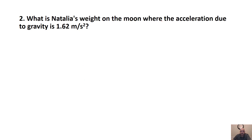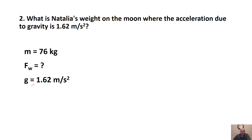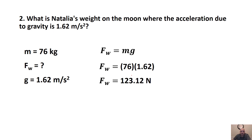What is Natalia's weight on the moon where the acceleration due to gravity is 1.62 meters per second squared? They're giving you Natalia's mass from before — 76 kilograms — because mass doesn't change. We're trying to find Fw, but now with this new G. So we have FW equals MG: 76 kilograms times 1.62, and we get 123.12 newtons as her weight.